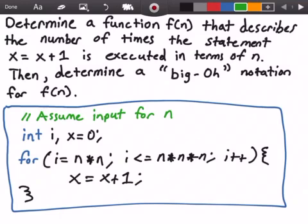Here in the blue rectangle I have some pseudo code for our function. We're going to assume that we have some arbitrary input for the value n, where n is defined somewhere else in the program. Next we create two variables i and x, two integer variables, and we set x equal to zero.